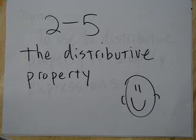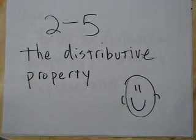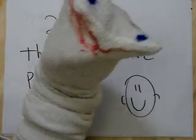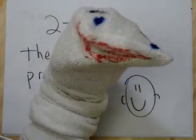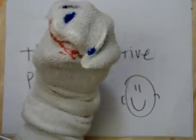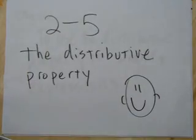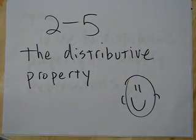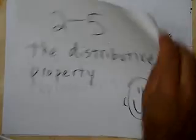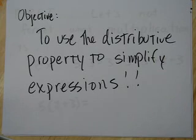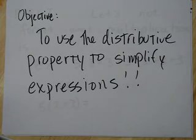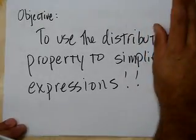Section 2-5: The Distributive Property. The objective is to use the distributive property to simplify expressions. We're going to simplify expressions using the distributive property.